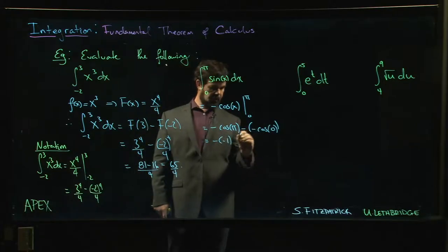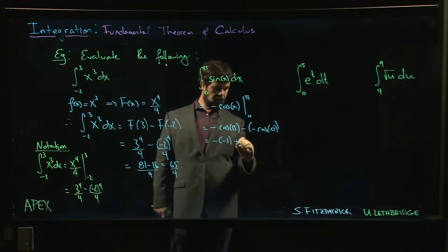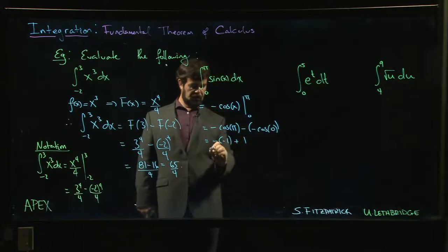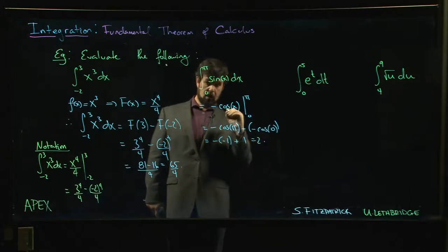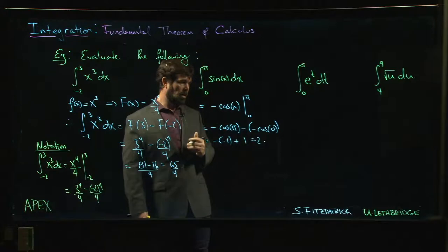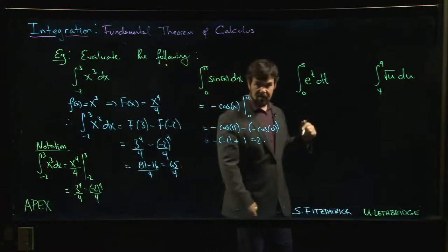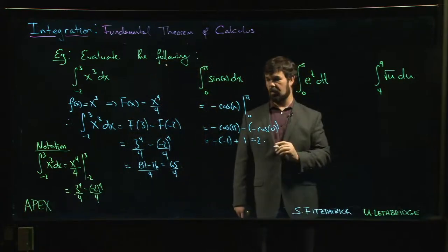So now this is minus. Cosine of π is minus one, minus minus is plus. Cos of zero is one, so one plus one. Our answer is two. Alright, that went pretty well, took us one minute. Let's move on to the next one.